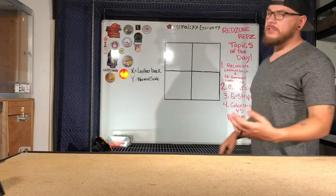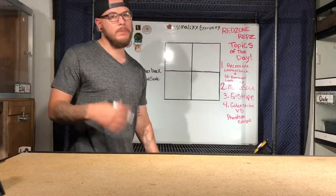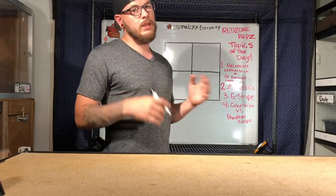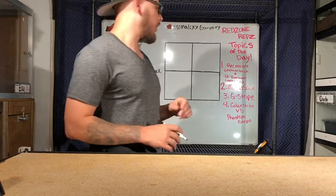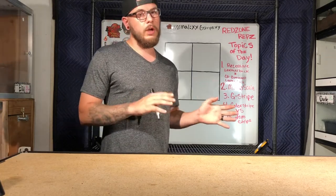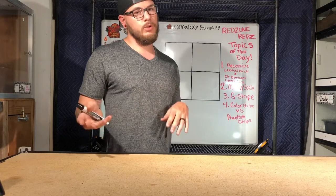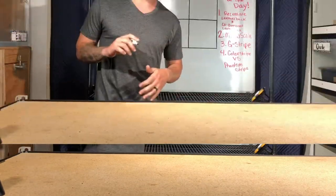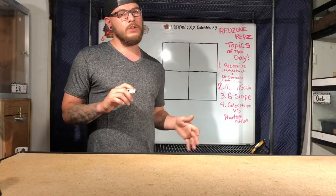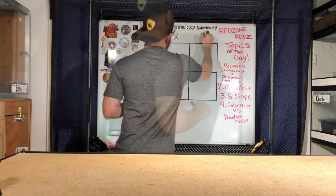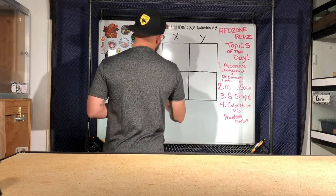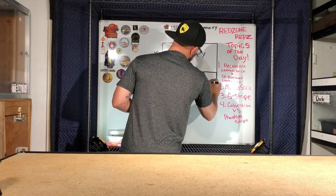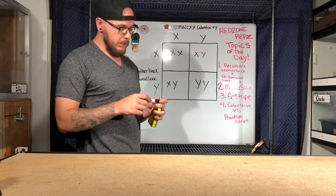Color stripe versus phantom stripe — they're actually the same thing, so we'll just call it color stripe. Some people use 'phantom stripe' to jazz up their dragon when they're trying to sell it, but it's the same thing. It sometimes gets confused with G-stripe, which it's not. G-stripe is a dominant trait, so you only need one dragon with genetic stripe to produce offspring with it. Color stripe is a recessive trait — both parents need to either be het or visual for color stripe. Breeding two dragons recessive for color stripe gives you one normal, two hets, and one visual color stripe — so 25% of the clutch would be color stripe dragons.